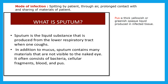Now let us see the mode of infection for tuberculosis. Spitting by patient, then through air, prolonged contact with and sharing of materials of patient. This disease can spread by a patient spitting, with the help of air, or by prolonged contact — coming in contact with that patient again and again, many times — in that case also the disease can spread.